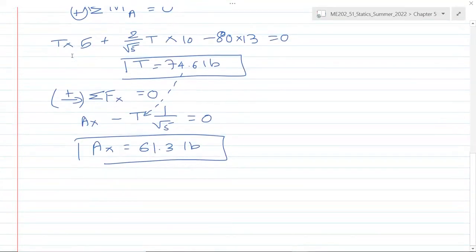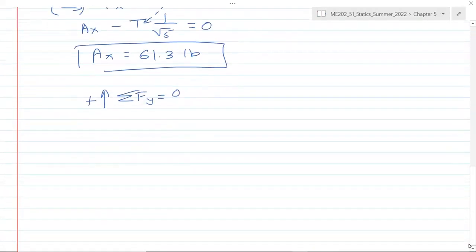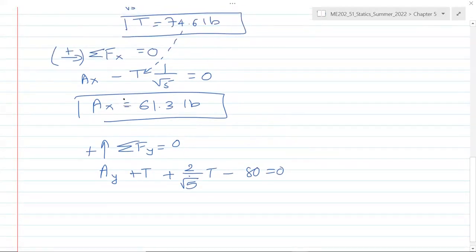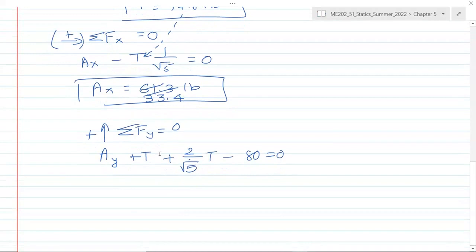The last part is using our third equation of equilibrium: sum of forces in vertical direction equal to zero. Going up is positive. The vertical forces are Ay, there are four forces: plus T plus vertical component of the other force minus Wc equals zero. When we substitute value of T here and we solve for Ay, this force is 61.3 pounds.